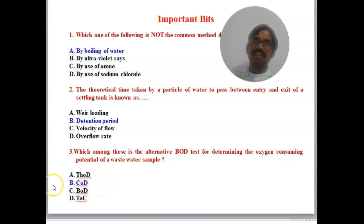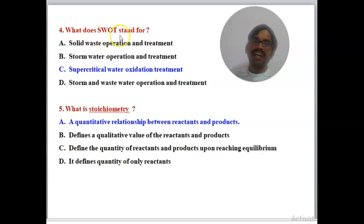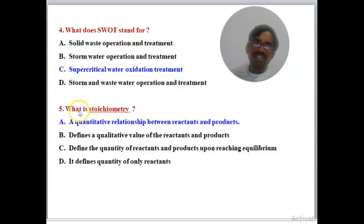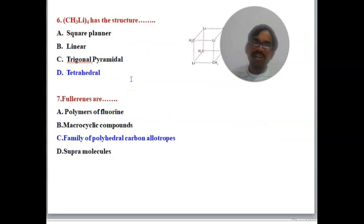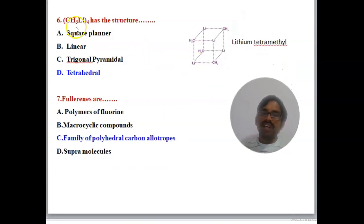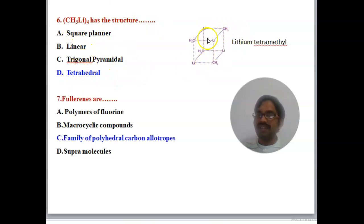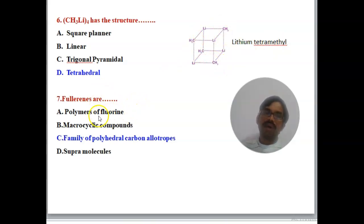Chemical Oxygen Demand (COD) is the alternate test for BOD for testing the oxygen-consuming potential of waste samples. Question 4: What does SWOT stand for? The right answer is Supercritical Water Oxidation Treatment. Question 5: What is stoichiometry? The quantitative relationship between reactants and products is called stoichiometry. Question 6: Lithium tetramethyl has which structure? Options are square planar, linear, trigonal bipyramidal, and tetrahedral — the right answer is tetrahedral. Question 7: Fullerins are a family of polyhedral carbon allotropes — macromolecular cyclic compounds.